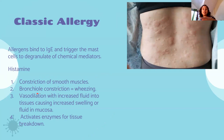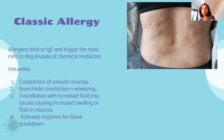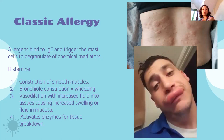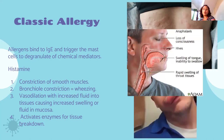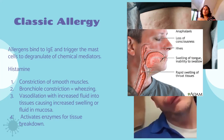Histamine can constrict smooth muscles and bronchioles — you may not be able to breathe. It causes more vasodilation, loosening the junctions between blood vessels so fluid escapes into tissue causing swelling. The worst case is anaphylaxis — excessive allergic reaction — where you can lose consciousness, your tongue swells, you cannot breathe. Rapid swelling of throat tissue can close your airway. The emergency treatment is an epinephrine shot.